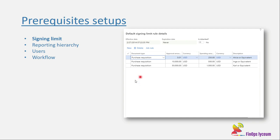The first important thing is we need to define signing limits. Signing limits can be defined for different documents — purchase order, invoice, expense report, etc. There are two things: approval amount and spending limit. Spending limit is the amount you are allowed by the company to spend without needing approval. In this case, Elisa is allowed to spend 250 dollars. If she creates a purchase requisition for more than 250, it must be approved by her manager, and if more than 10,000 it goes to her manager's manager.